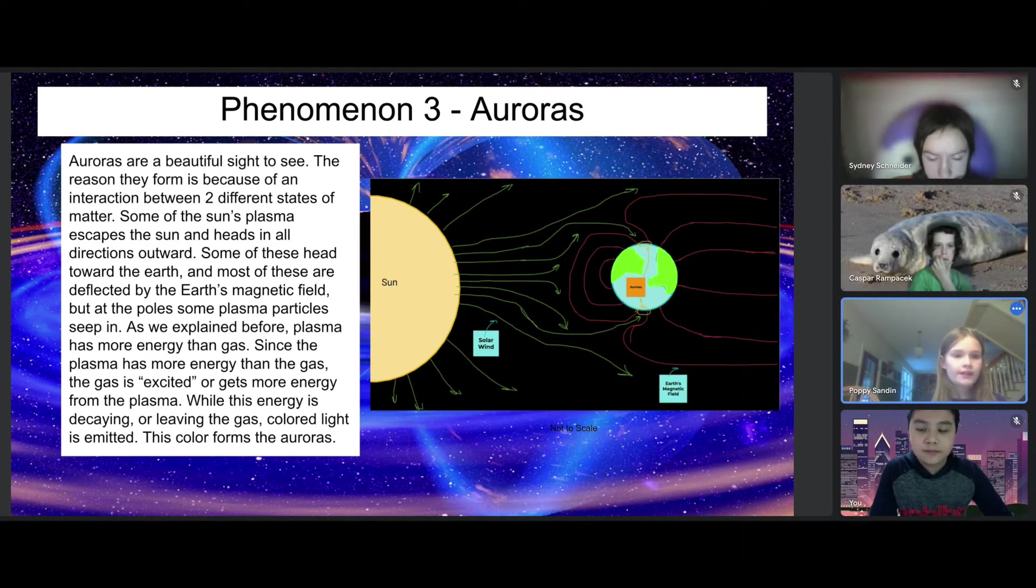Auroras are a beautiful sight to see. The region where they form reveals an interaction between two different states of matter. Some of the sun's plasma escapes and heads in all directions outward. Some of these particles head toward Earth and most are deflected by Earth's magnetic field, but at the poles, some plasma particles seep in.